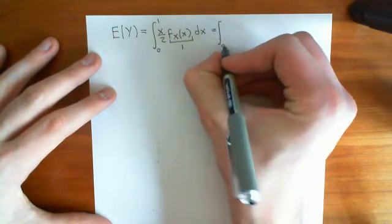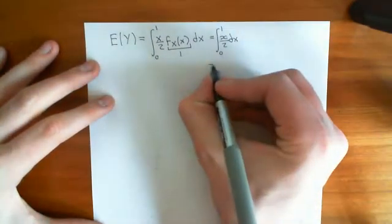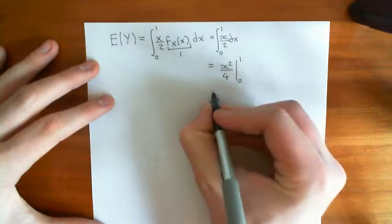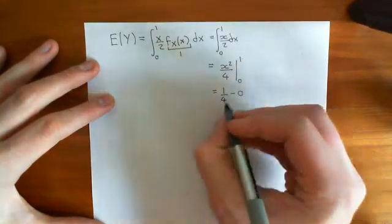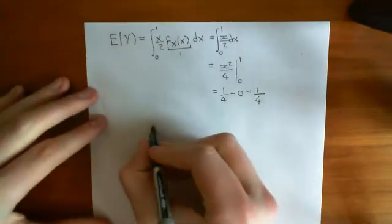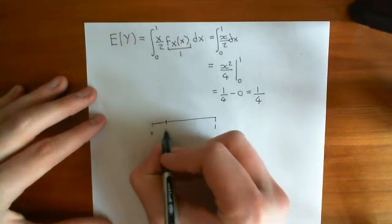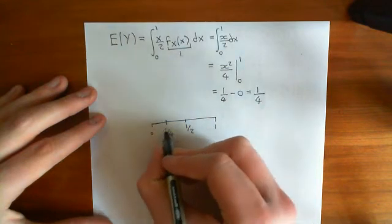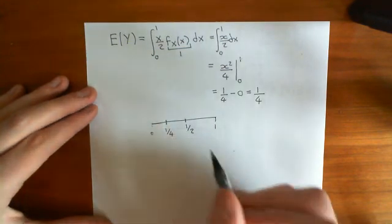We now get the integral from 0 to 1 of x over 2 dx. Applying the fundamental theorem of calculus, the antiderivative of x over 2 is x squared over 4, evaluated between 0 and 1. Substituting in 1 gives a quarter, and substituting in 0 gives 0. So the expected value of Y — the expected point at which you make the second break — is one quarter. Drawing the stick from 0 to 1, the expected second break is at a quarter. This fits our intuition: the expected first break is at a half, and then a half of a half gives a quarter.